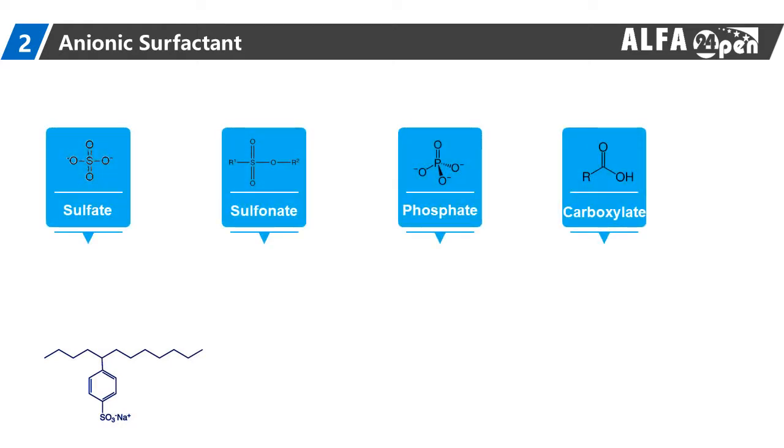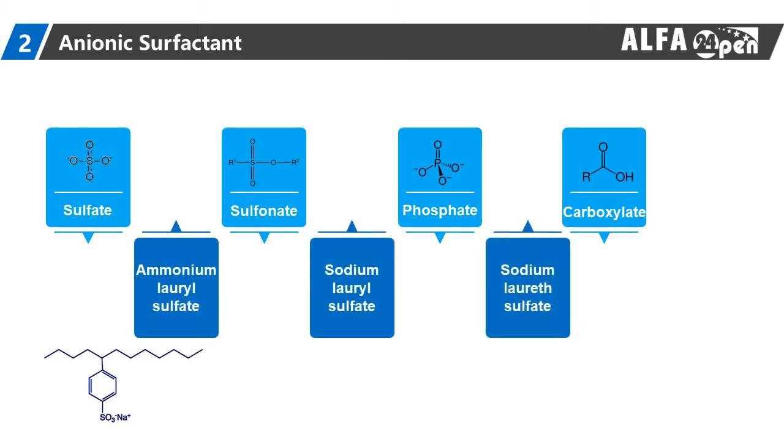Anionic surfactants contain anionic functional groups at their head, such as sulfate, sulfonate, phosphate, and carboxylate. Prominent alkyl sulfates include ammonium lauryl sulfate, sodium lauryl sulfate, sodium laurel sulfate, and sodium myreth sulfate.